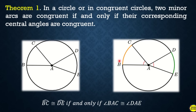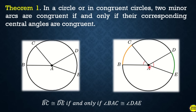For example, arc BC will be equal to arc DE if angle BAC and angle DAE are congruent. So whatever the measure of one central angle, that will be the same measure of the other — they will be equal when the central angles are equal.